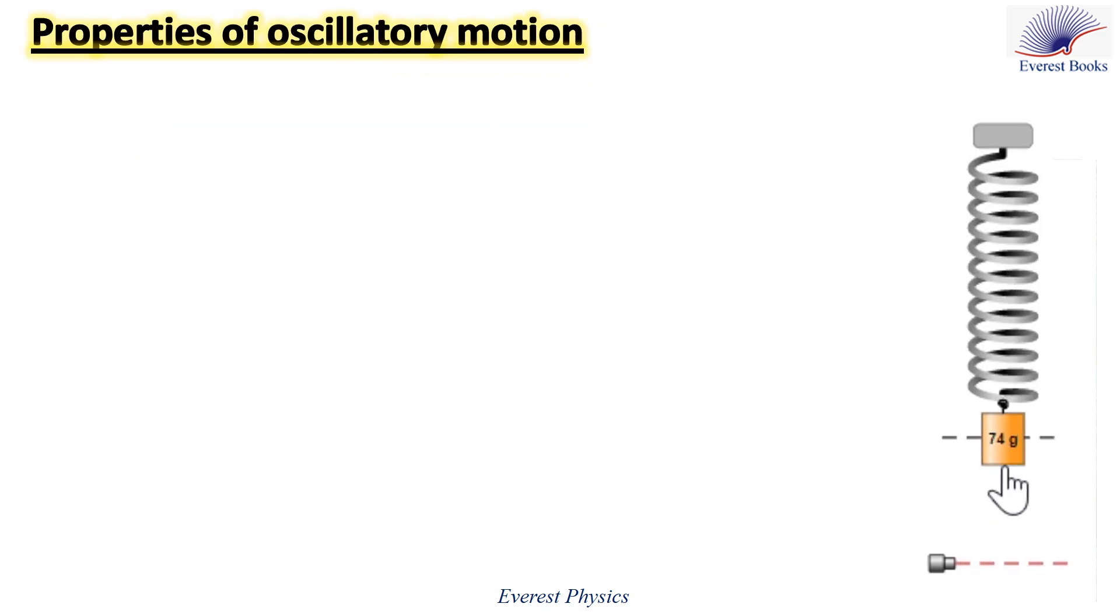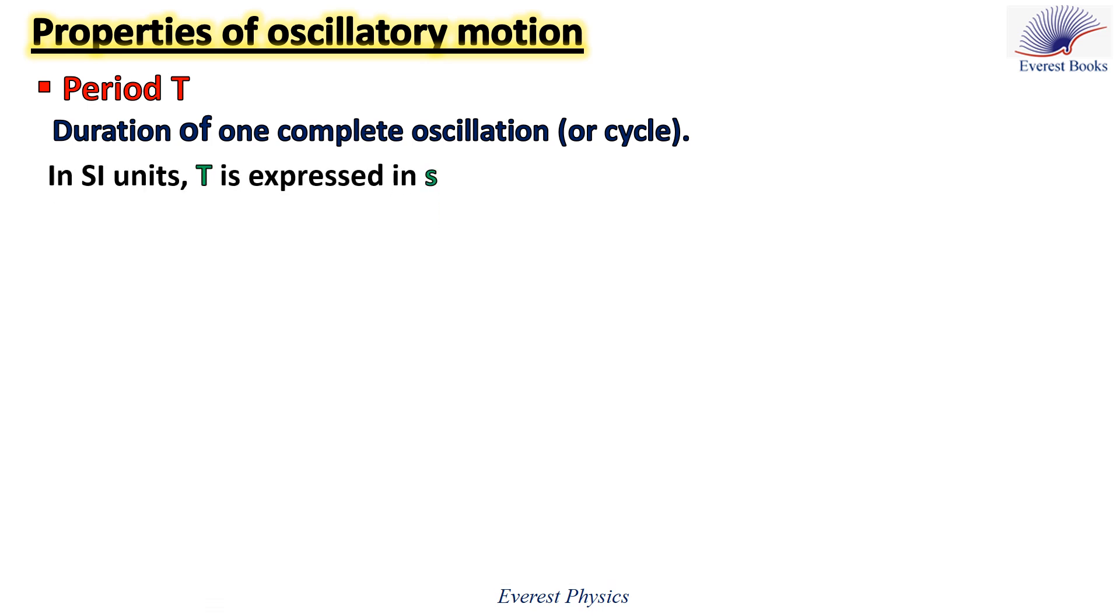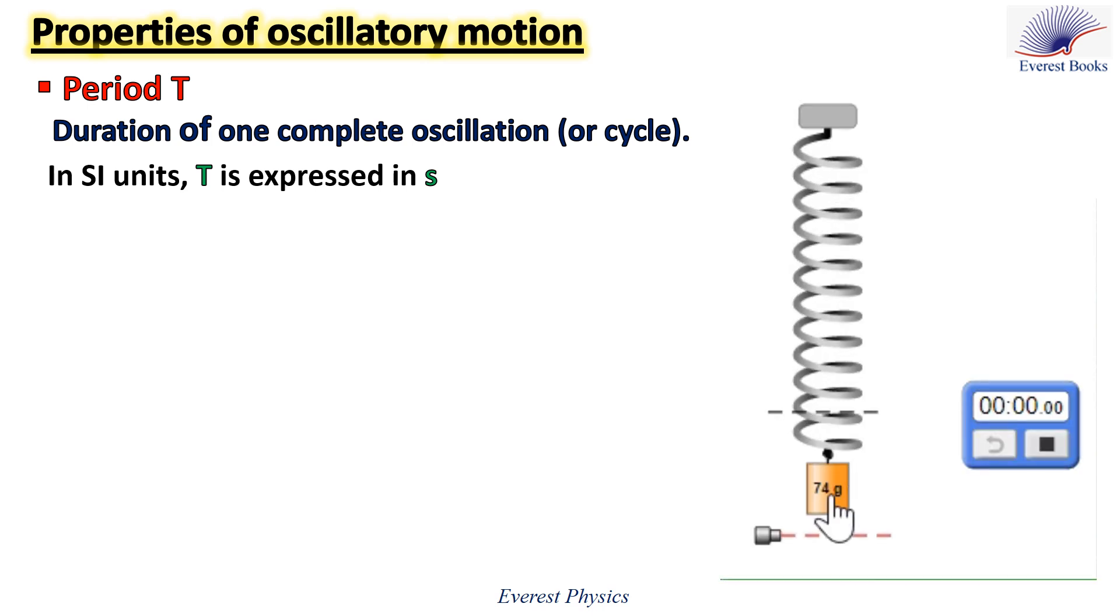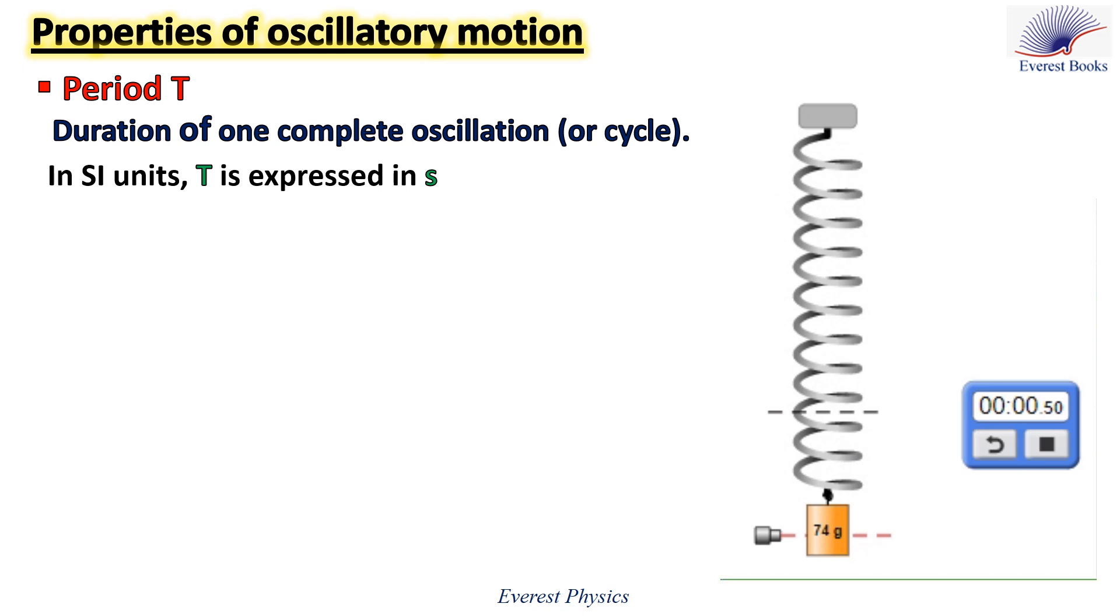In this animation, the block is shifted from its equilibrium position and then it is released from rest. Observe the oscillations. Let's study the properties of oscillatory motion. The first property is the time period which is the duration of one complete oscillation or cycle. The SI unit of the period is second. The block is in its lowest position. It takes the block 0.5 seconds to return back to its lowest position for the first time. This time is the period.